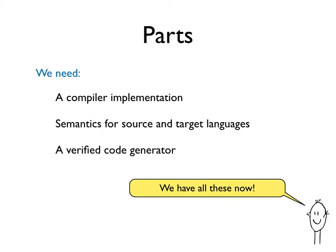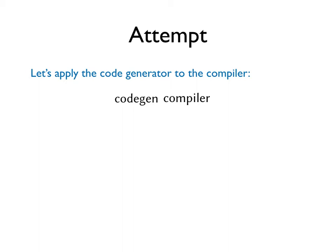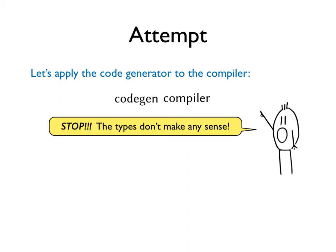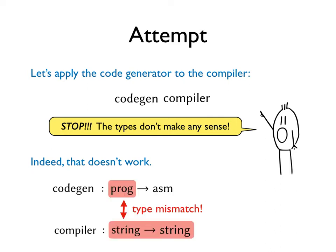So getting back to what we need, it looks like we have all these now. Let's attempt to bootstrap the compiler. Remember, bootstrapping is applying the code generator to the compiler itself. Let's do it! At this point, someone will say, stop! The types don't make any sense! And indeed, applying the code generator directly to the compiler does not work, because there is a type mismatch.